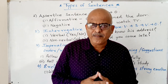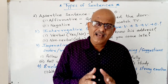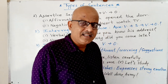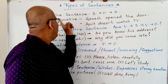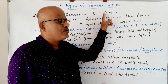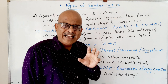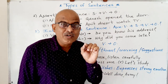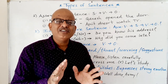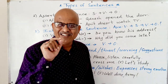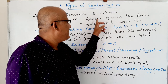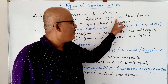Let's look at the structure. For Direct and Indirect, we start with each sentence type. The Assertive sentence has the structure: Subject plus Verb plus Object — Kartha, Kriyapad, Karma. It ends with a full stop. For example: 'Ganesh, open the door.' Subject: Ganesh. Verb: open. Object: the door.